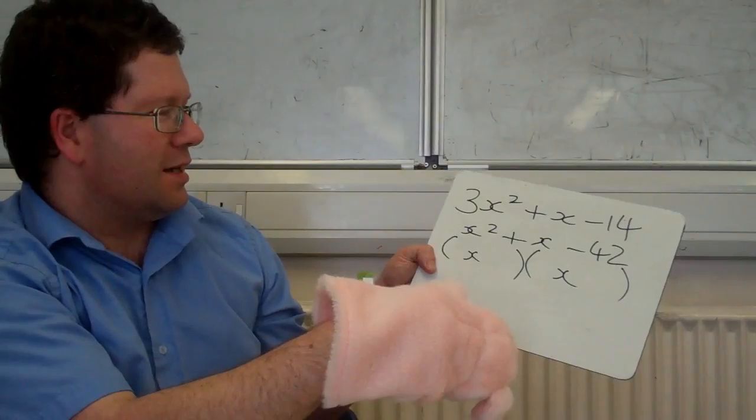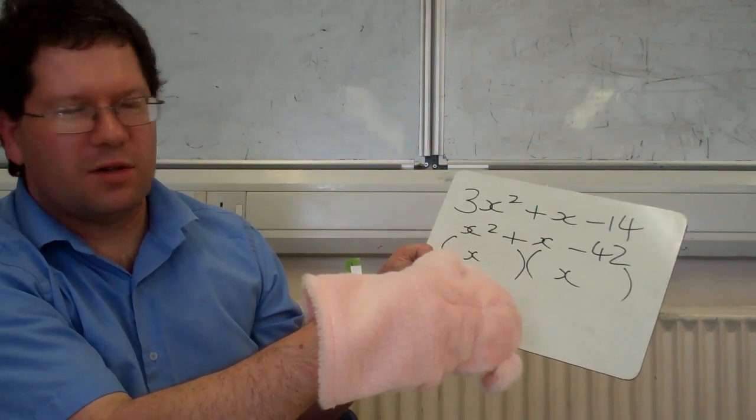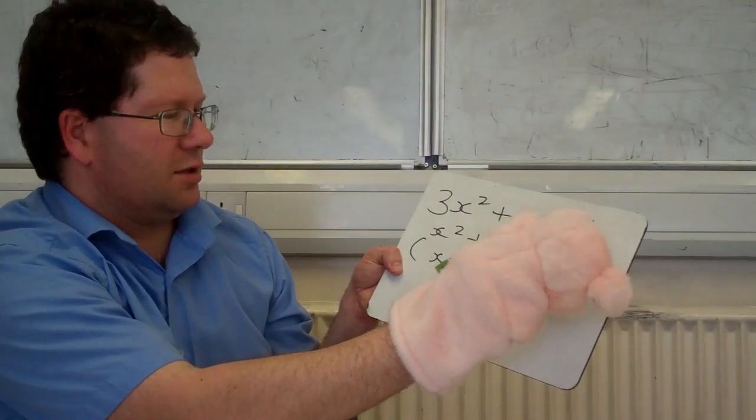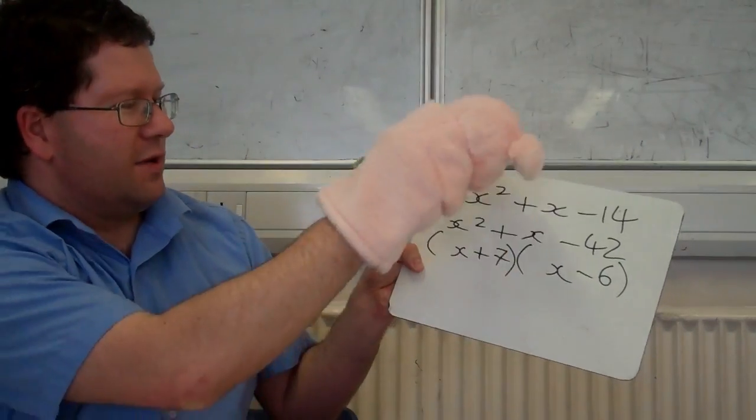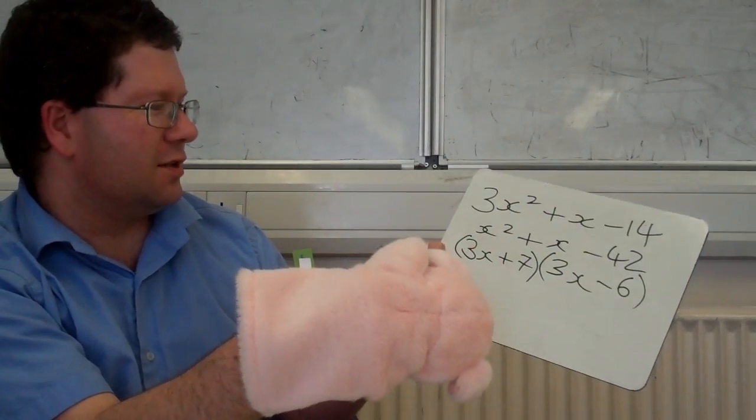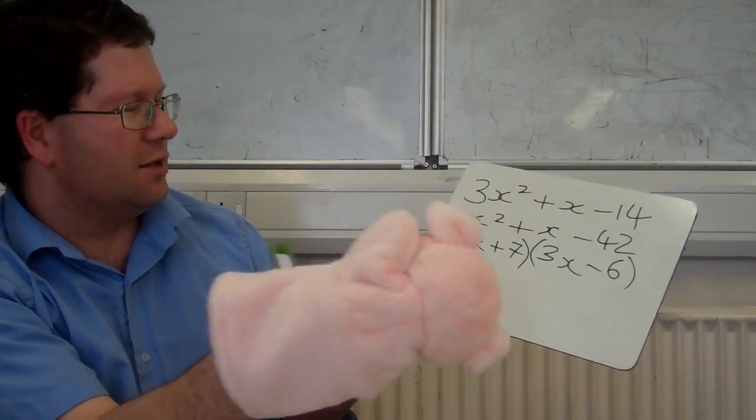So you put it in brackets, but you leave a gap. Two numbers that add up to 1, times to make minus 42, there's 7 and minus 6. Is that right? That 3 that you had there, you put that back in there. And the final step, you look in each bracket individually, and if there's a common factor, then you get rid of it.